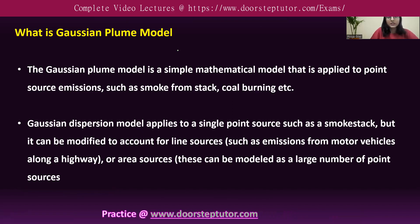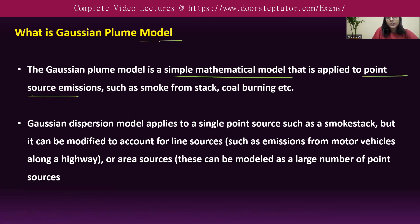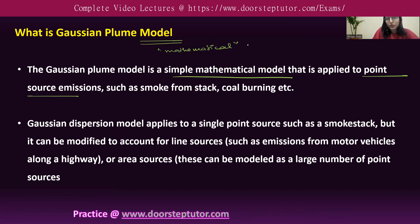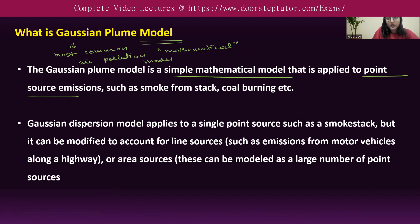The Gaussian plume model is a simple mathematical model used to calculate the concentration of a pollutant from a point source emission. Since it is mathematical, we are using calculations to measure air pollution concentration. This is also the most common air pollution model used for calculating pollutant concentration, especially at ground level.